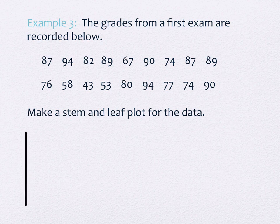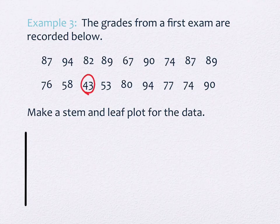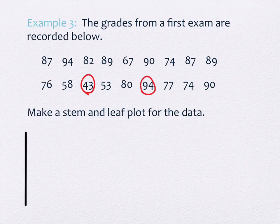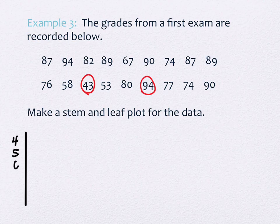We make a vertical bar and find the smallest and largest values, just like before. The smallest grade is 43 and the highest is 94. The stems are all the tens-digit values going from smallest to largest. So on the left-hand side we have 4, 5, 6, 7, 8, and 9. If someone got 100, we'd put a 10 there too.